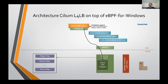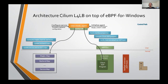Now that the XDP program is loaded and attached, the agent is ready to take input for any LB service instance. When a service is configured, the agent gets a front-end and back-end configuration. Front-end configuration consists of the front-end IP and port, and back-end configuration consists of a list of back-end IPs and ports. Once the agent gets this information, it computes a Maglev hash for the back-ends and updates it in the Maglev map. It also updates the back-end maps, service maps, and the reverse NAT maps.